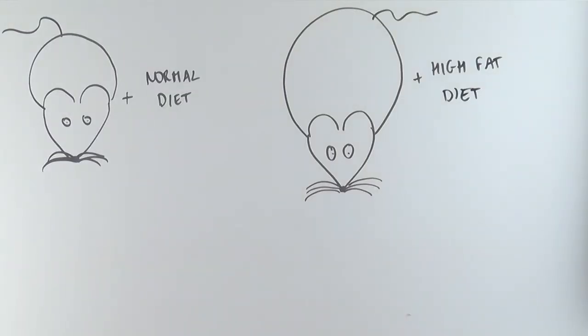In order to do this, the scientists fed either obese mice a high-fat diet or lean mice a normal diet and examined the development of liver cancer. Diet alone was not sufficient to cause cancer.